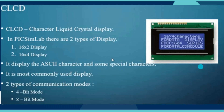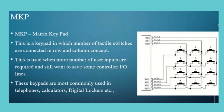Moving towards CLCD — what is CLCD? It is a Character Liquid Crystal Display. In CLCD, we can use two types of display: 16x2 or 16x4. It displays ASCII characters and some special characters. The two types of communication modes are 4-bit mode and 8-bit mode.